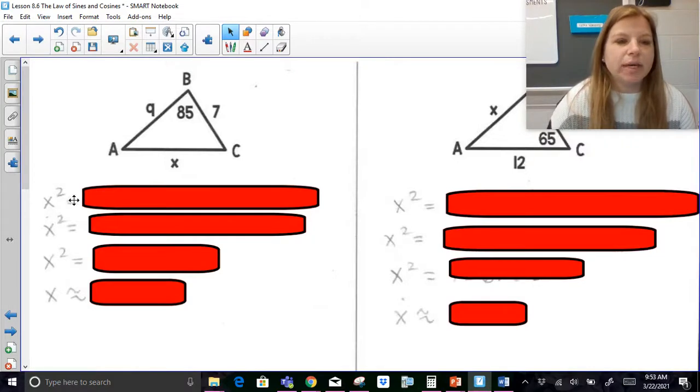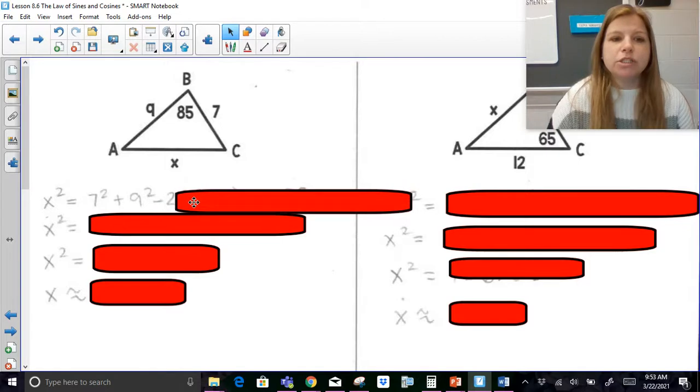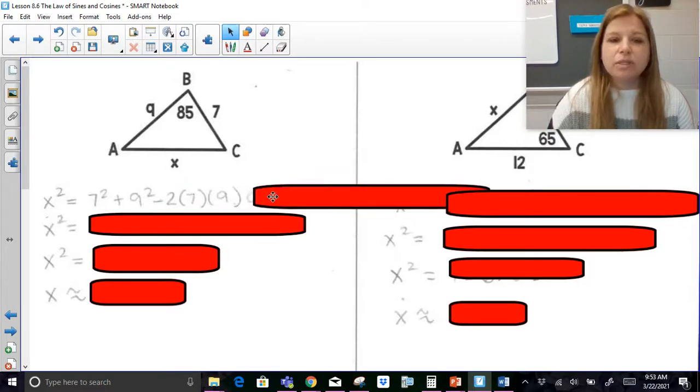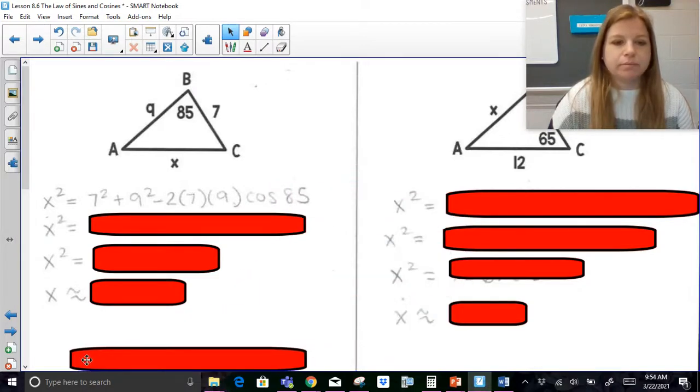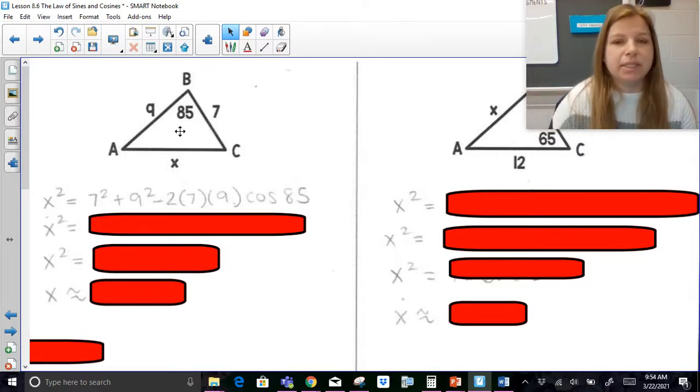So here it says x squared, so I'm solving for x. So here's what the formula looks like. So the side you're trying to solve for, squared, is equal to the sum of the other two sides squared, so 7 squared plus 9 squared, minus two times those sides, 7 and 9, times the cosine of the angle we're solving for. So the side squared that we're solving for is equal to the sum of the other two sides squared, minus two times those sides, times the cosine of the angle opposite the side we're solving for.